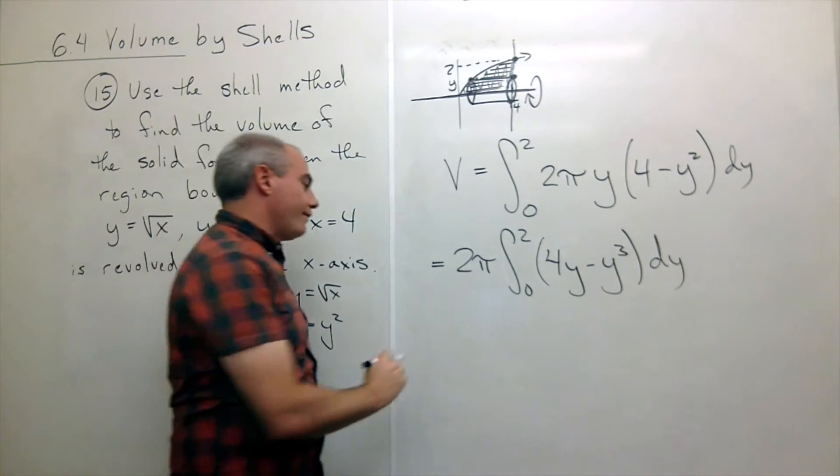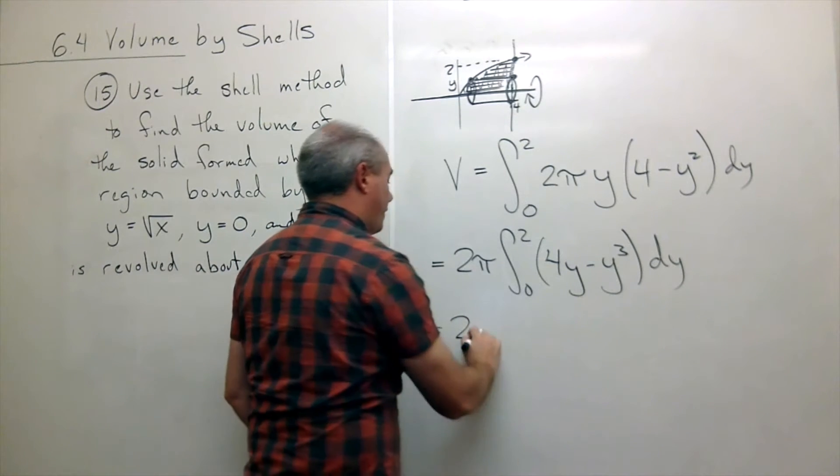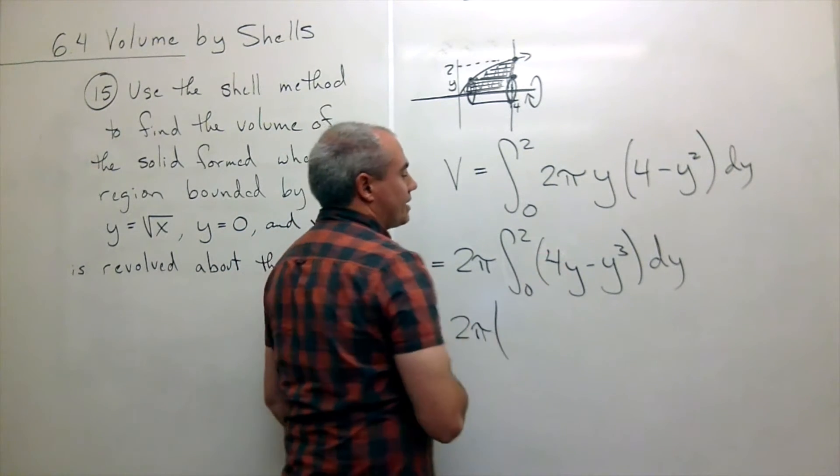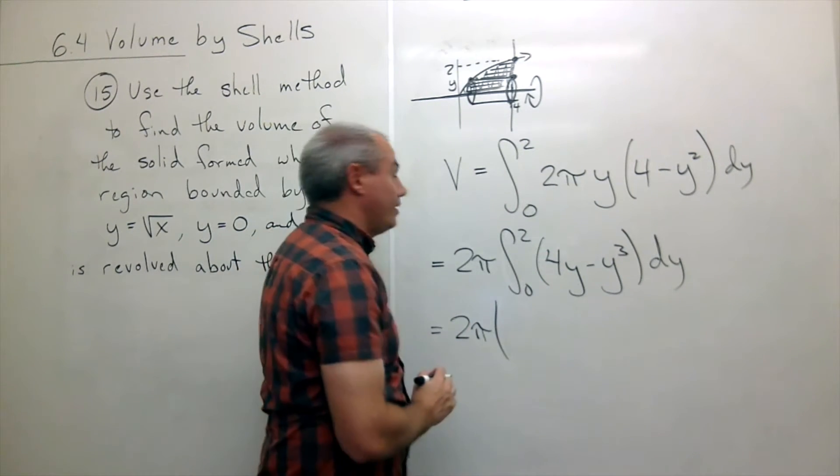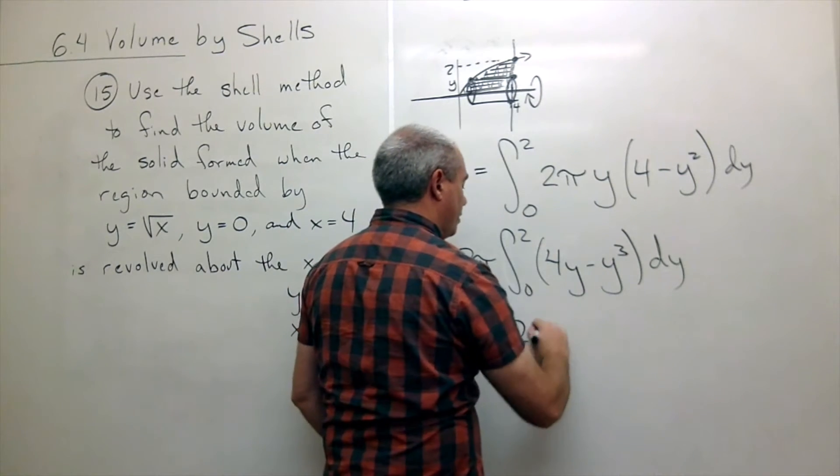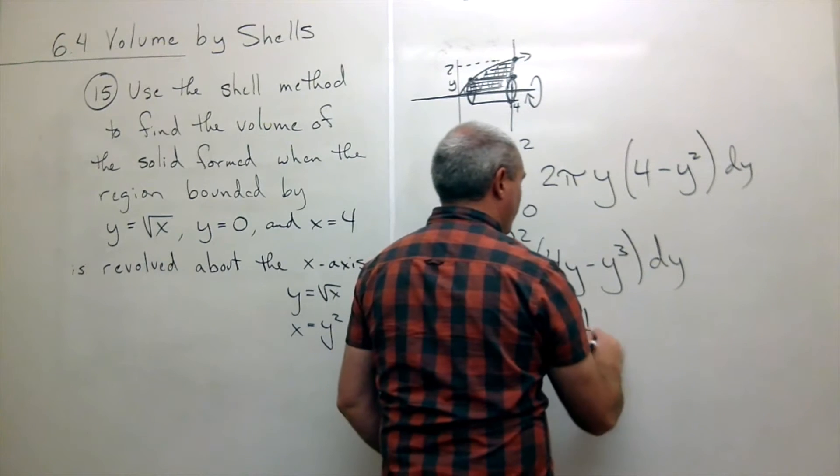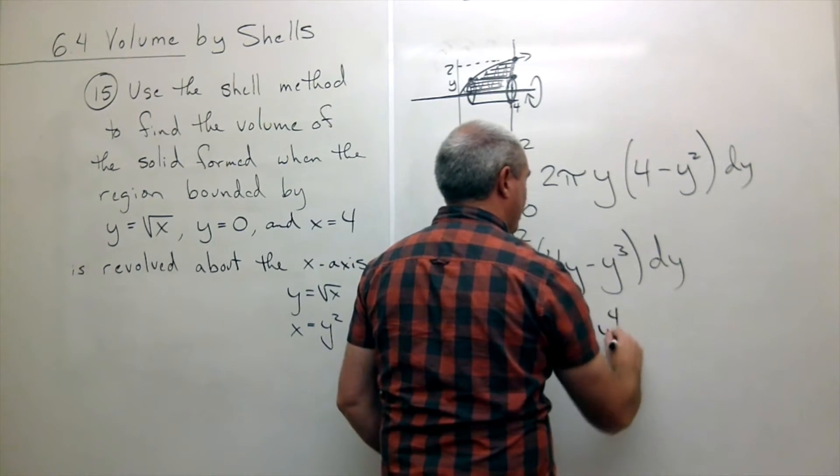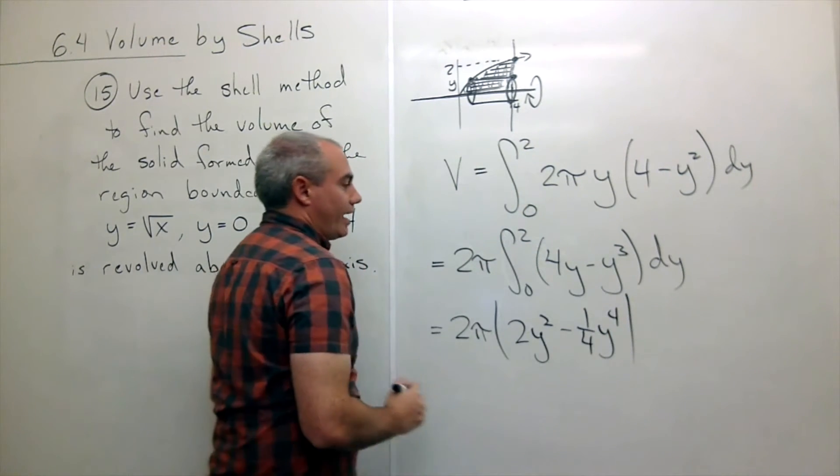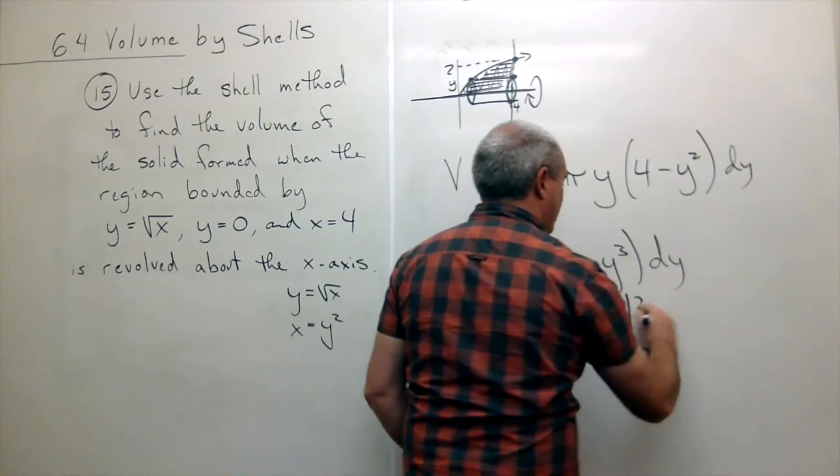Take an antiderivative here, and I get 2 pi times antiderivative of 4y would be 2y squared. Antiderivative of negative y cubed is negative 1 fourth y to the fourth. And I'm going to evaluate that from 0 to 2.